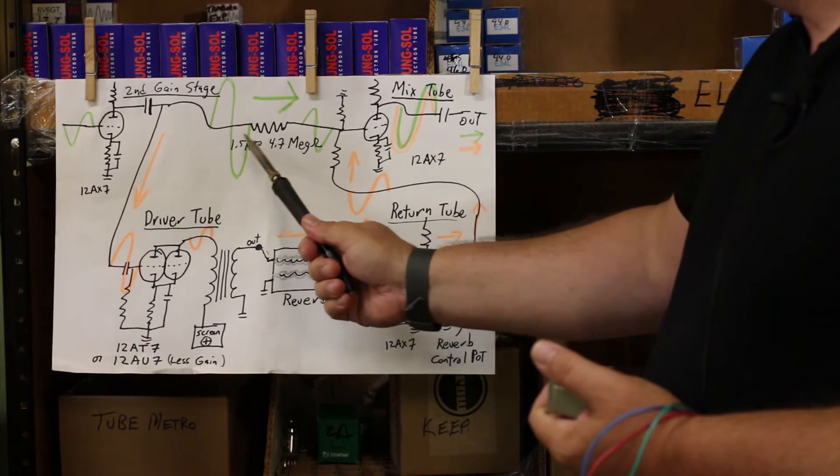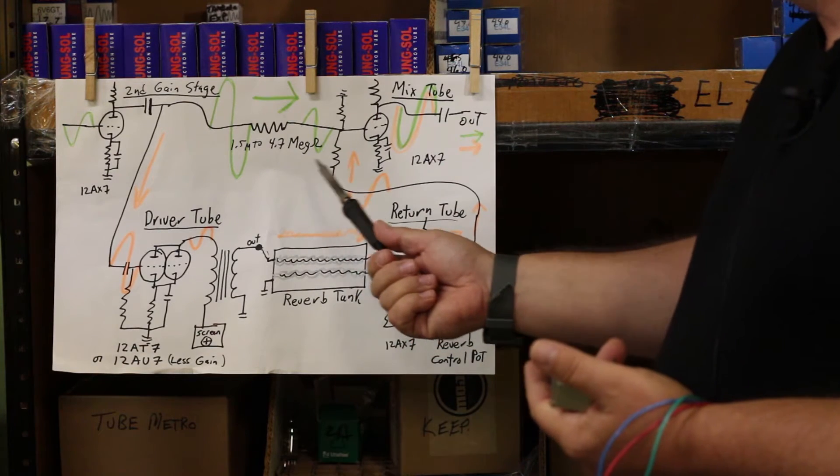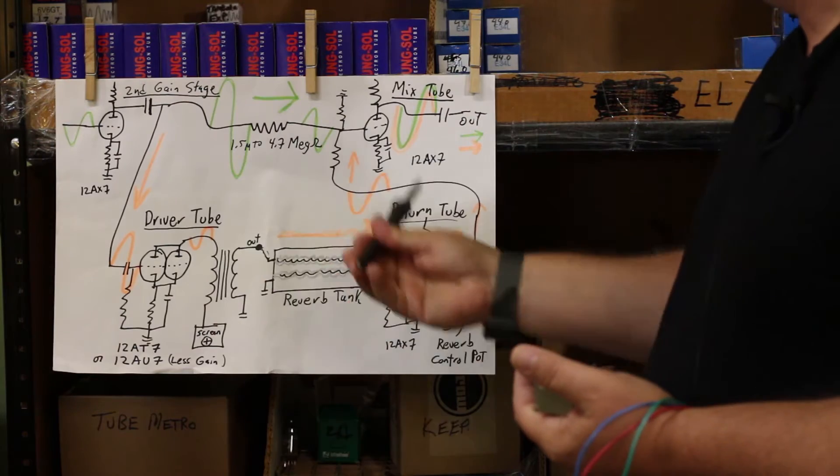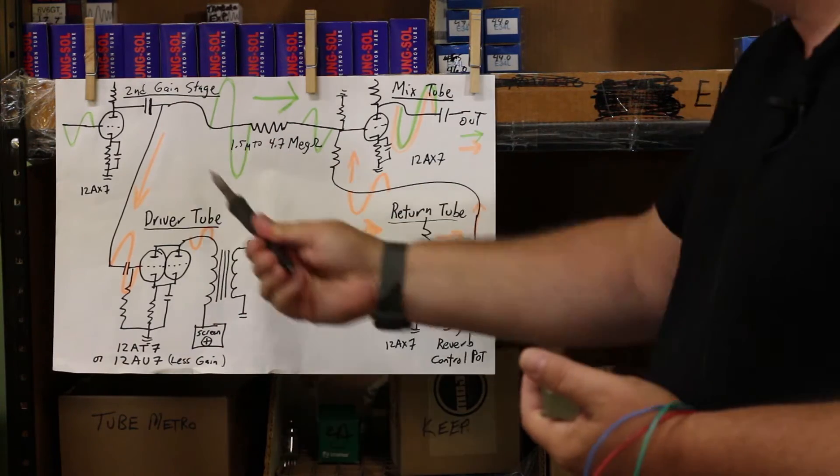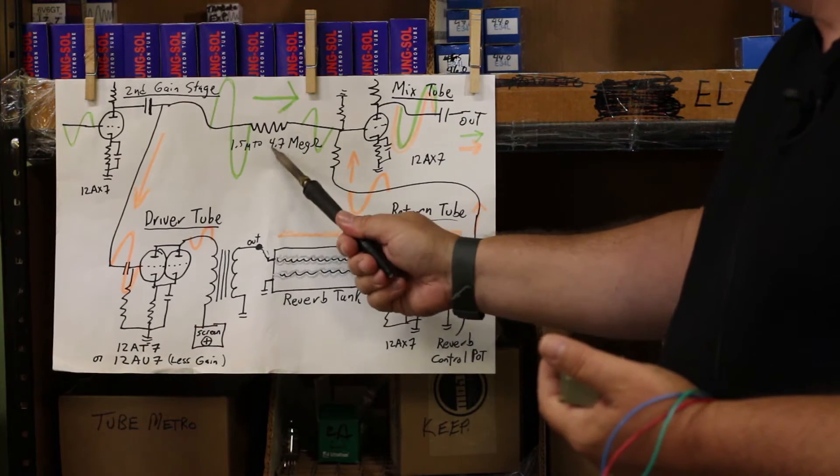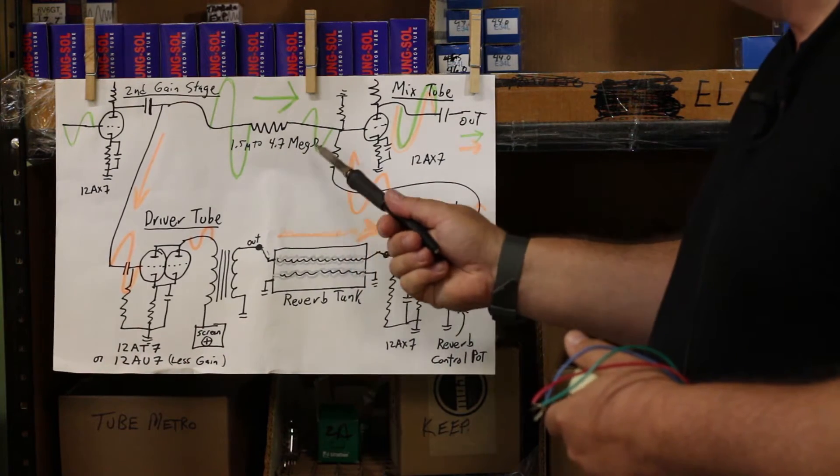And this resistor can be varied depending on how much dry or wet signal you want. If it gets too low, you run the chance of some internal feedback happening where the reverb just goes round and around. You don't want that. But anyway, 4.7 meg, that's what you'd see in a deluxe, for example.